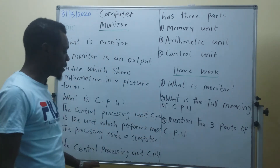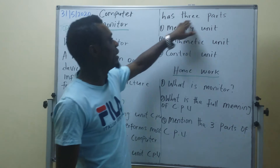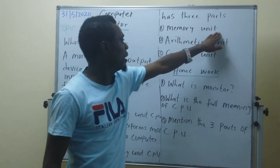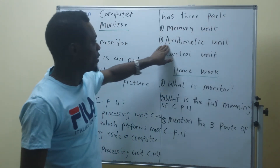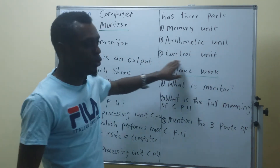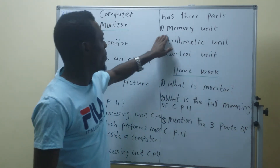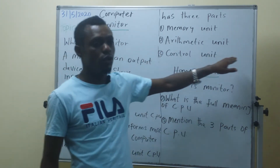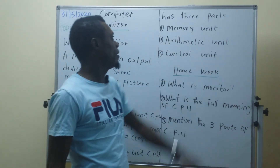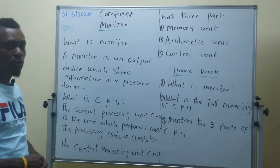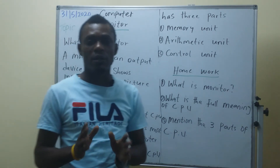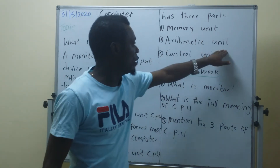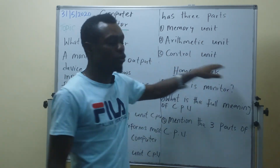The central processing unit has three parts: the memory unit, the arithmetic unit, and the control unit. Memory unit, arithmetic unit, and control unit — those are the three parts of the CPU.